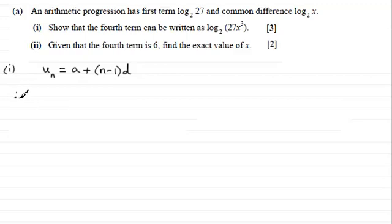So, therefore, in this question, the fourth term, u4, is going to be equal to the first term, which we're given here, is the log in base 2 of 27, and then it's plus n minus 1, well, n is 4,